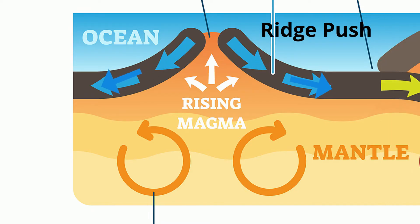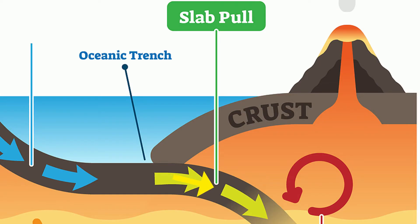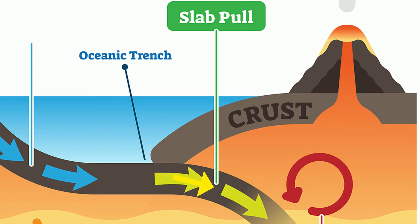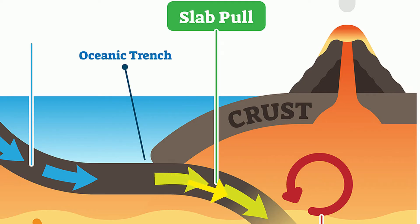At subduction zones, the denser tectonic plate will sink and subduct beneath the less dense tectonic plate. The leading edge of the subducting plate sinks into the mantle and pulls the rest of the plate with it. This process is called slab pull, and it relies on gravity to pull down the tectonic plate and cause movement.